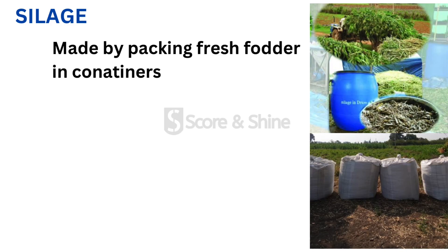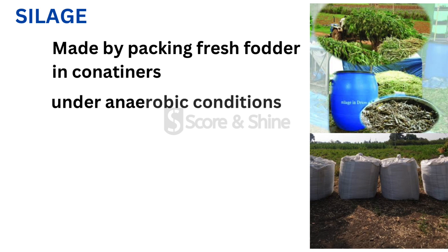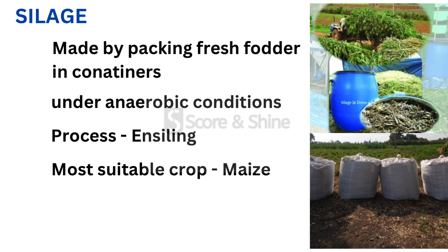Silage is made by packing fresh fodder in suitable containers and allowing it to ferment under anaerobic conditions, which means not letting air inside, and without undergoing much loss of nutrients. This process of making silage is called ensiling. Silage is used for feeding livestock during the off season, which means when fodder is not sufficient for the cattle. The most suitable crop for making silage is maize.